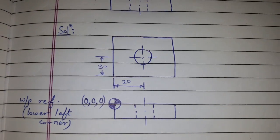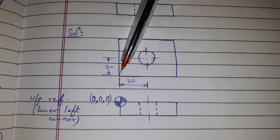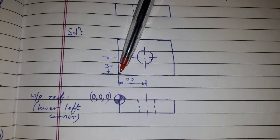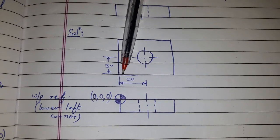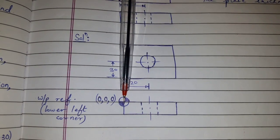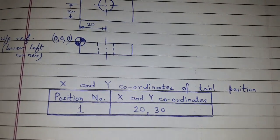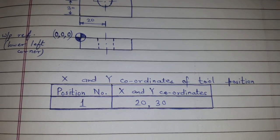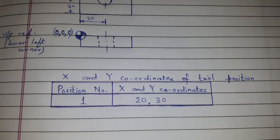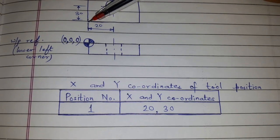First, we have to take the workpiece reference as the lower left corner. Here the X coordinate is 0, Y coordinate is 0, and Z coordinate is 0. We will start with a table where we mention the positions of the drilling tool. There is only one position: position number 1, with X and Y coordinates as 20 and 30.